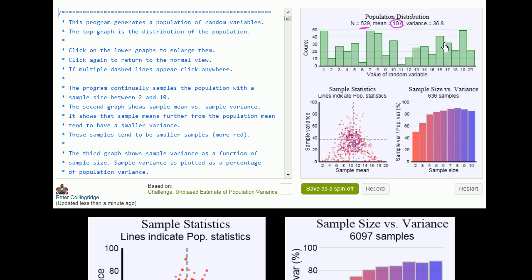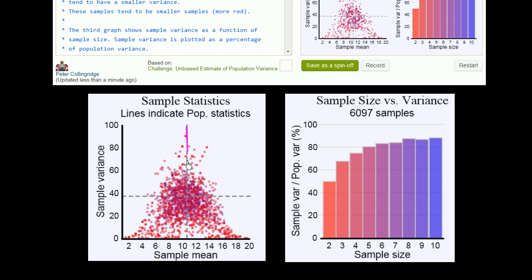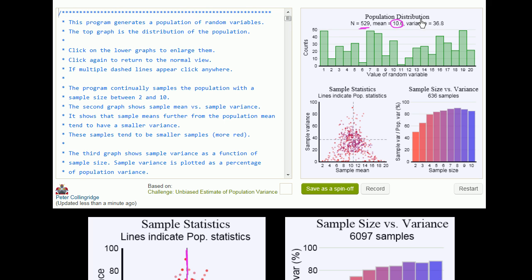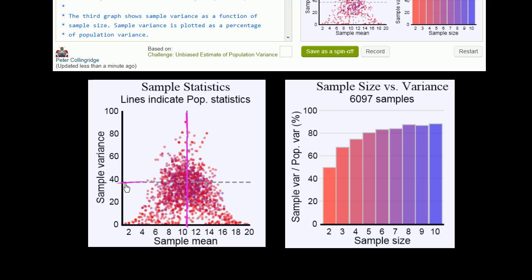And down here in this chart, he plots the population mean right here at 10.6, right over there. And you see that the population variance is at 36.8. And right here, he plots that right over here, 36.8.